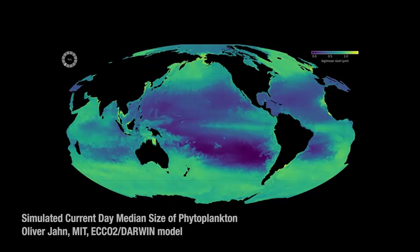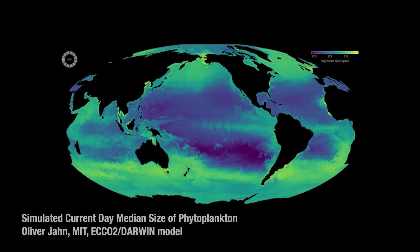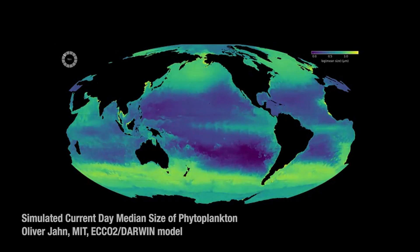One tool scientists use are numerical models — computer simulations of the ocean's physics, chemistry, and biology — which can be run forward into a future world to see what happens when CO2 increases and temperatures warm.